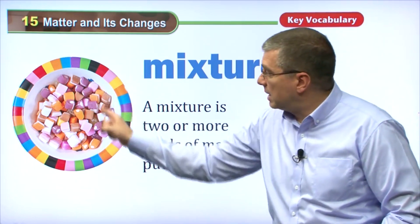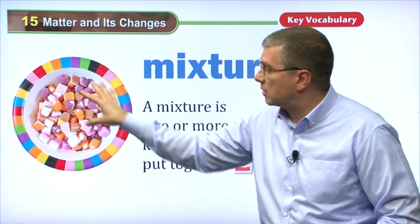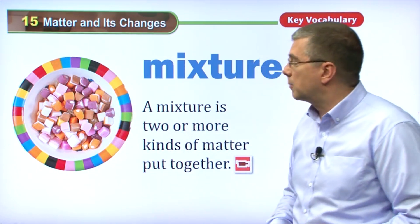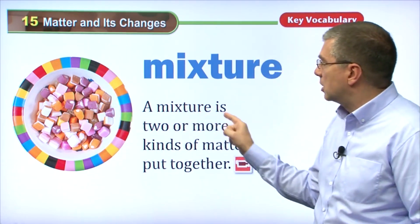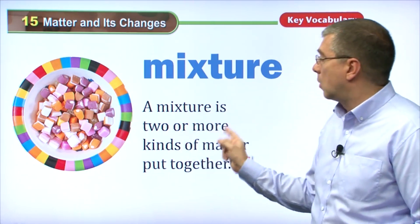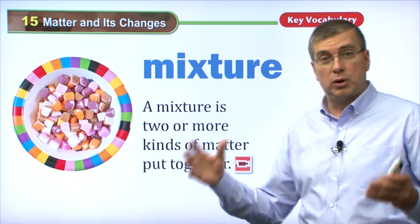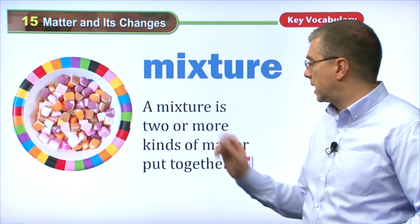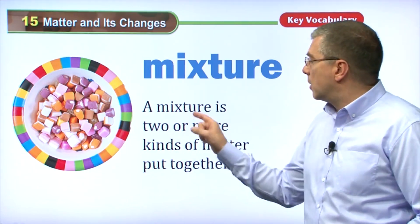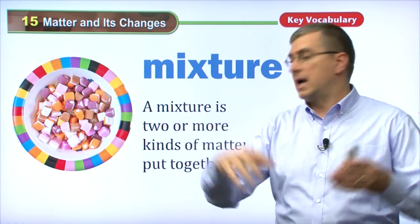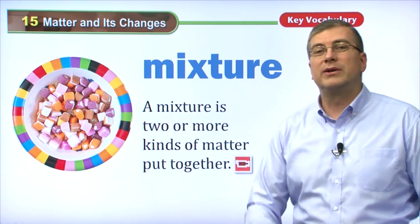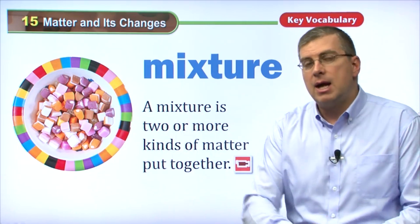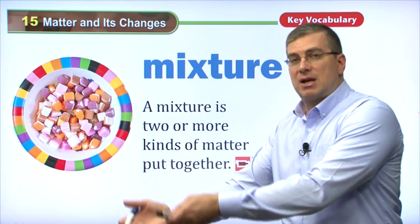Over here, we have many different candies, and these candies are a mixture of different colors and different types of sugar, probably, to make one candy. So a mixture is two or more kinds of matter put together. There are a couple of different ways that we can mix things — we're going to mix two or more kinds of things together and make a mixture.